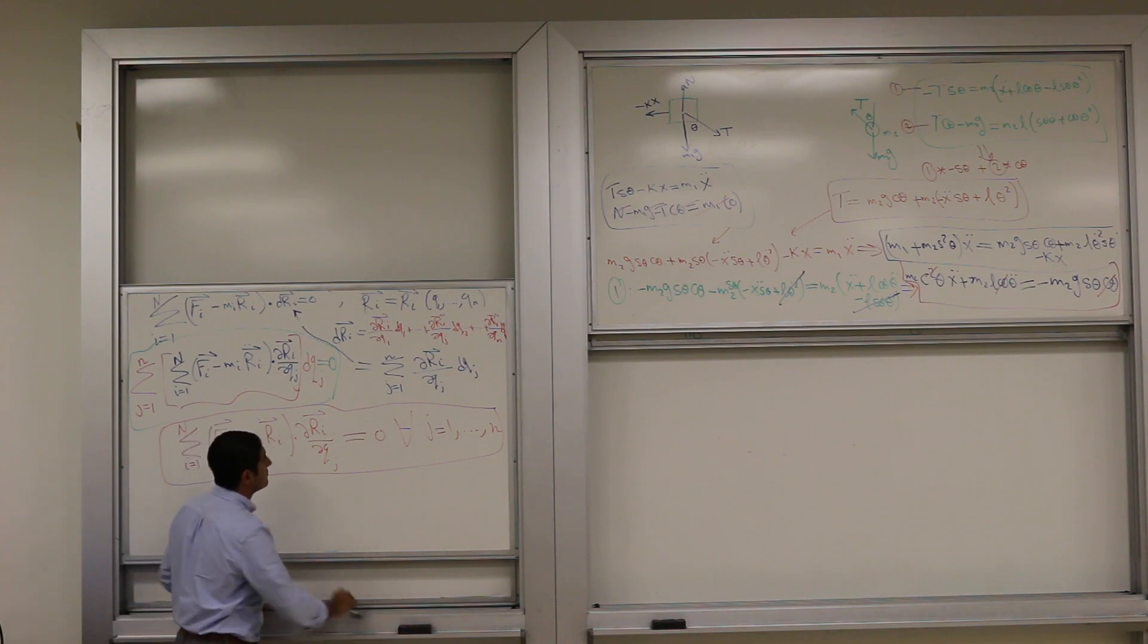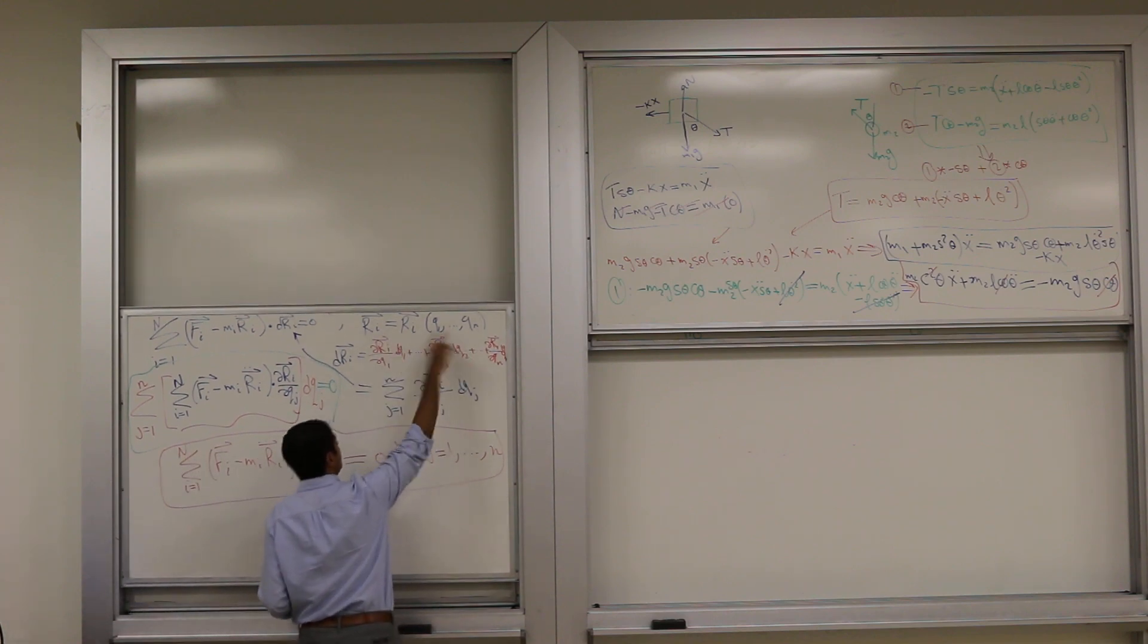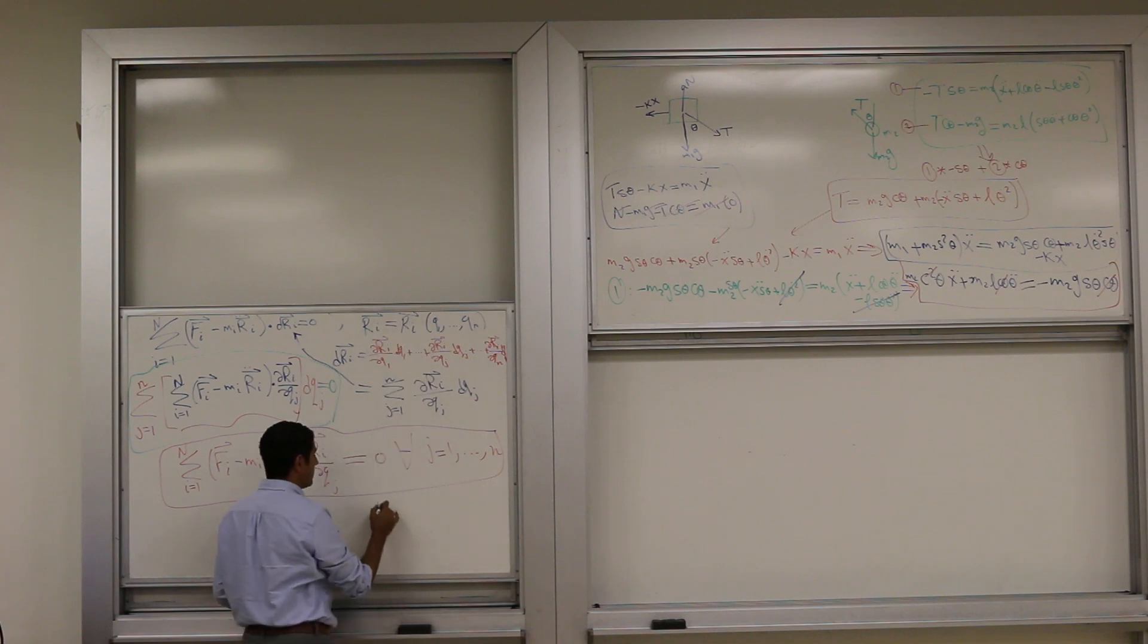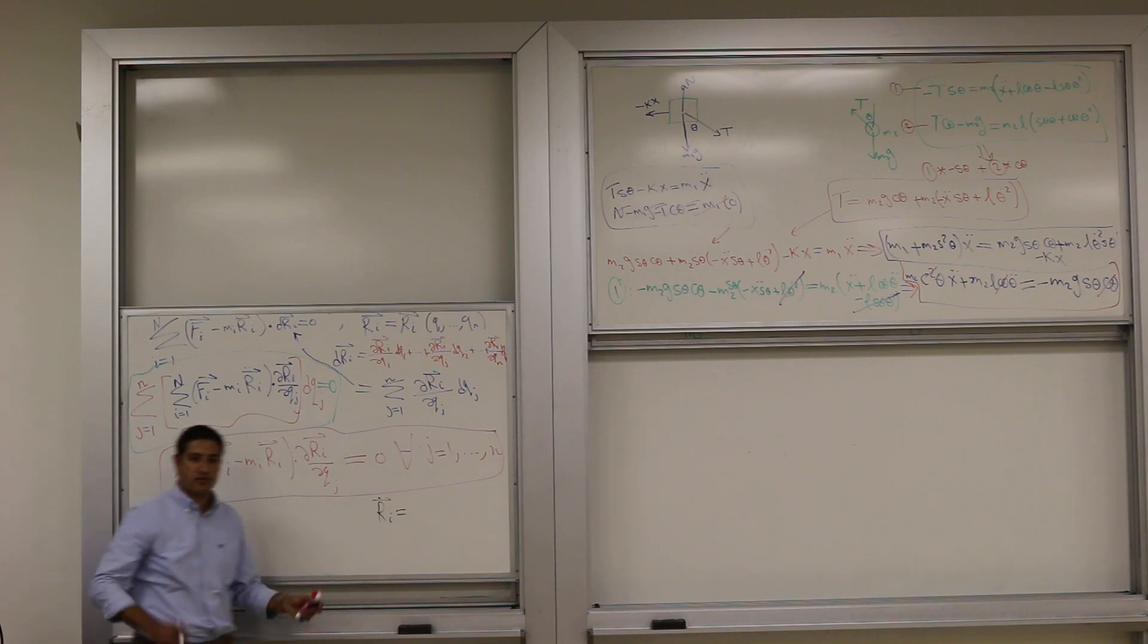Just on a side note here, if this is the position vector, the blue one, can you tell me how you're going to get r dot please? What is r dot? How are you going to differentiate the velocity?